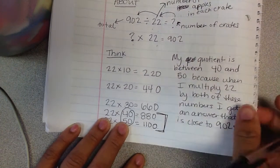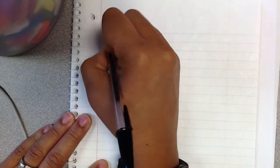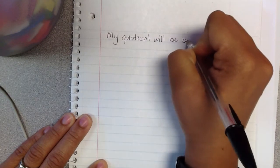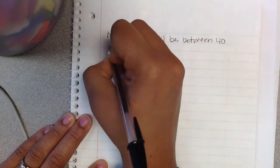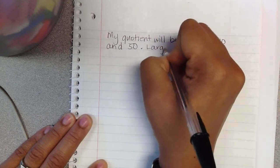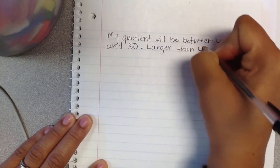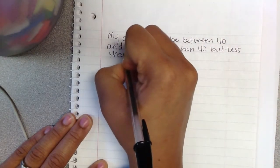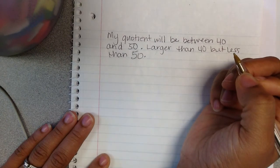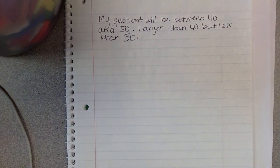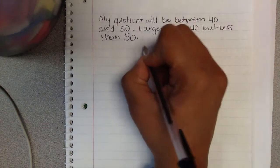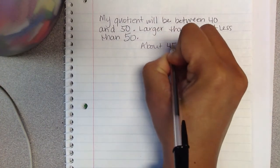How did I know it was between 40 and 50? Well, I knew that because when I multiply 22 by both of these numbers, I get an answer that is close to 902. So I know, in essence, that my quotient will be between 40 and 50. It's going to be larger than 40 but less than 50 because I saw the answers there that were larger and less than 902. So I can think about it like that, that it's going to be somewhere between 40 and 50. Well, what's halfway between 40 and 50? Halfway between 40 and 50 is about 45 crates.